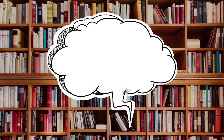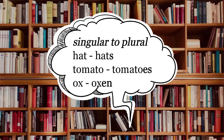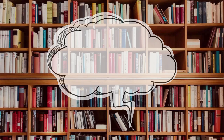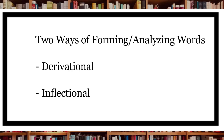Here are the examples for number of nouns. The plural of hat is hats, with 's'. The plural of tomato is tomatoes, with 'es'. The plural of ox is oxen, with 'en'. Words can be formed by adding or changing derivational or inflectional affixes, and those are just a few of the ways how to analyze a word structure.